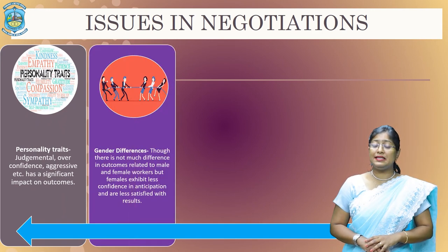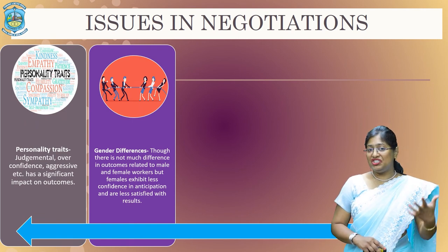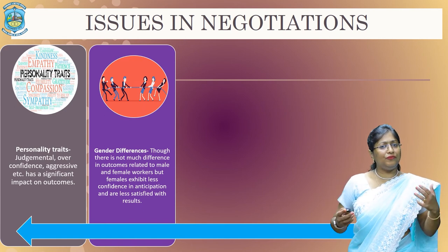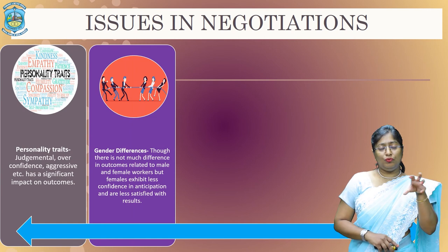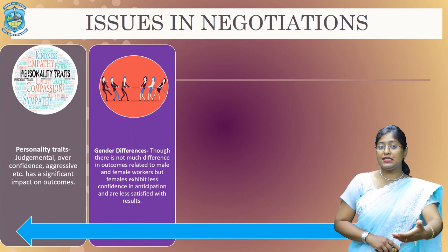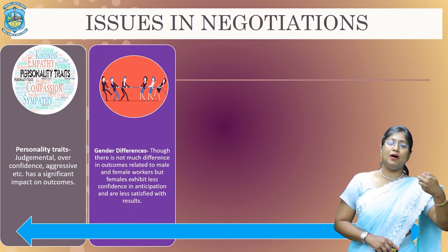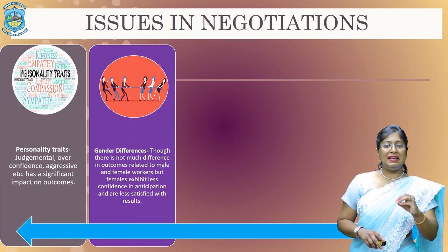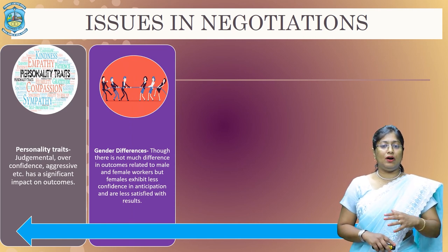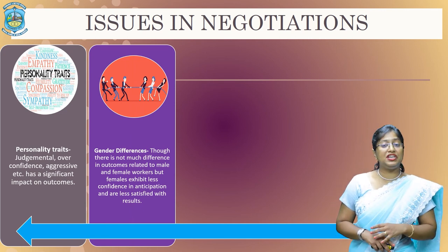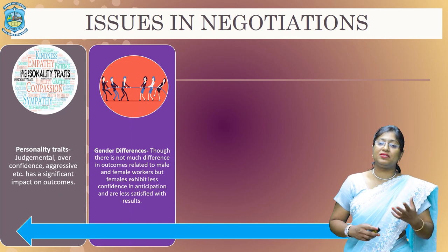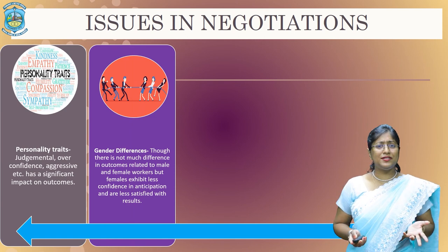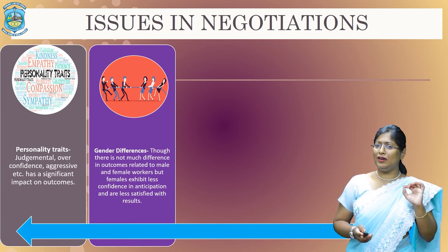The second issue is gender differences. When talking about gender differences — though researchers don't prove it to a greater extent — somewhere or the other, while people negotiate, outcomes basically tend to favour males as compared to females. Many times females exhibit lesser confidence in anticipation of the negotiation or are very less satisfied with the results they get out of negotiation, whereas males tend to get an upper hand. This is not a conclusive finding, but gender differences are small issues.